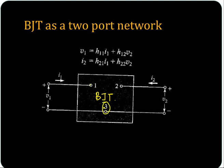Terminal three represents the emitter, two represents the collector, and one represents the base. When you consider this BJT as a two port network, V1 is the input voltage and I1 is the input current.